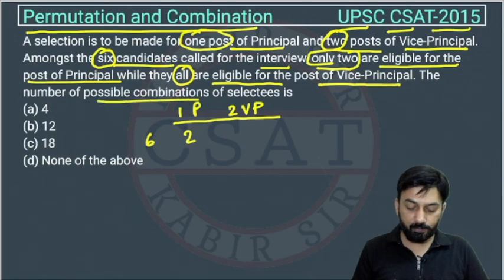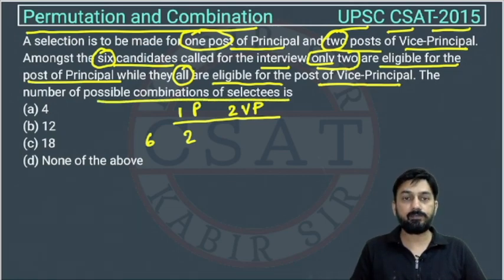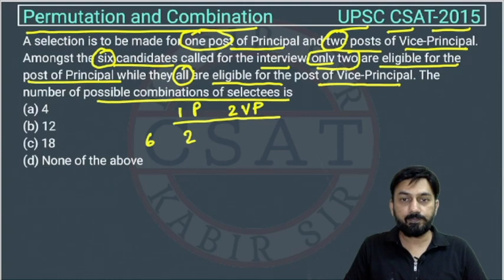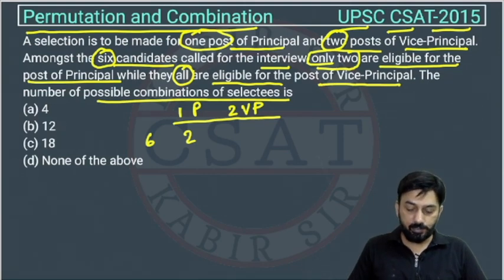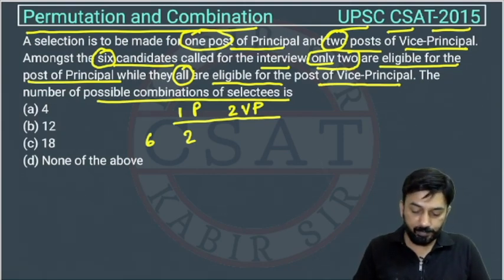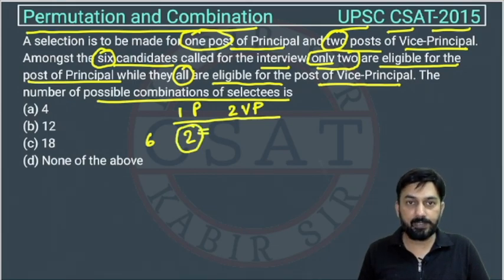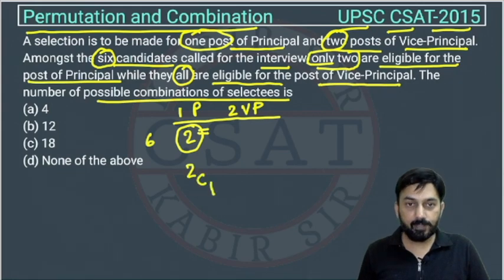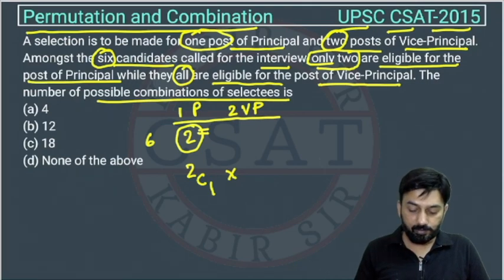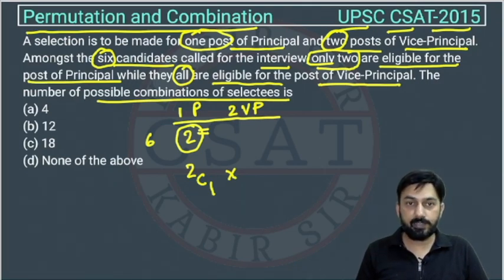The number of possible combinations of selection — this is a standard problem of combination. Out of the two candidates eligible for principal, one will be selected, so this will be 2C1. After selecting the principal, one candidate is used up, so now we are left with five remaining candidates.